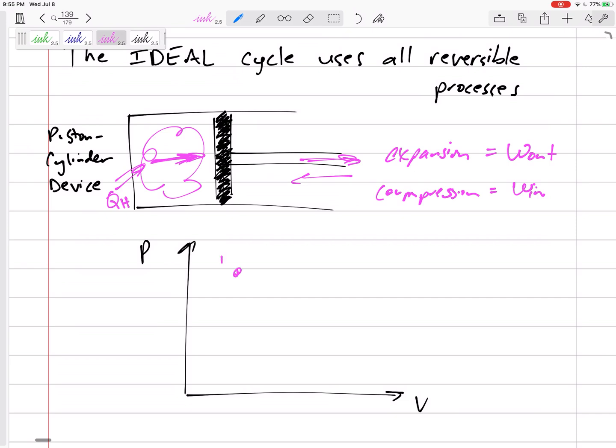So here we go. This is how we can get from state 1 to, let's call it state 3, using reversible processes. Well, the first step is to go from 1 to state 2, and this is going to be an isothermal expansion.